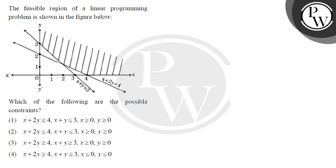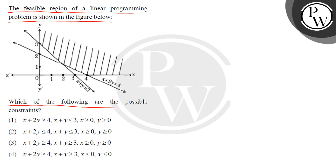Hello students, let's read this question. The question is: the feasible region of a linear programming problem is shown in the figure below. This is our figure and this is the feasible region you can see. Which of the following are the possible constraints?